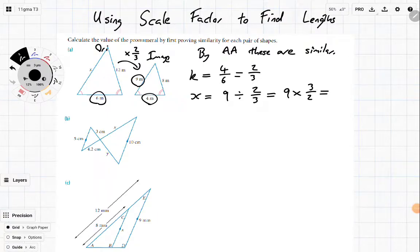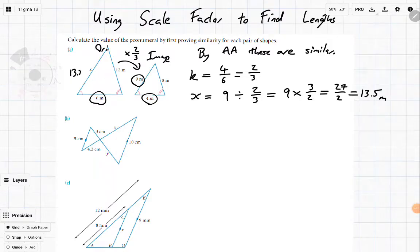Well 9 times 3 is going to be 27 and it's still over 2 and then 27 divided by 2. Well that's equal to 13.5 because half of 26 would be 13 plus you've got the extra one so you get a 0.5. So that means X is going to be 13.5 meters.